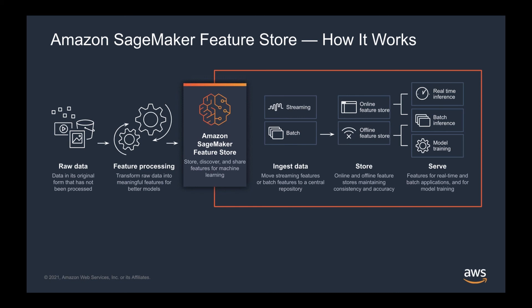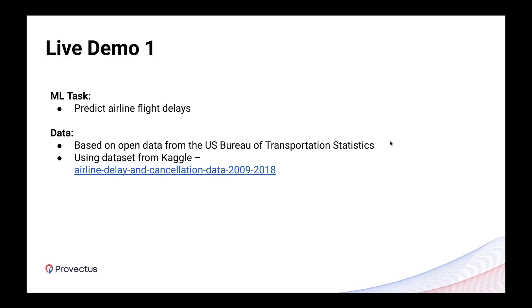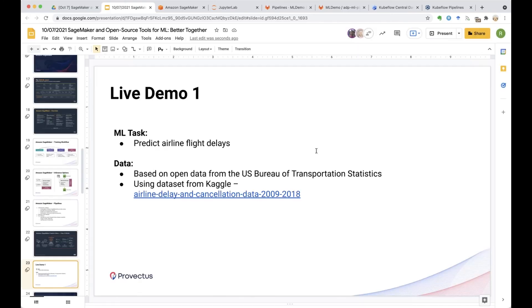Now let's move to the live demo. The machine learning task we're solving is predicting airline flight delays. As source data, we use open datasets from the United States Bureau of Transportation Statistics, pre-aggregated as a Kaggle dataset. Let me show you how this pipeline looks in SageMaker.